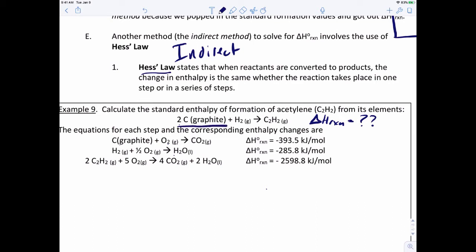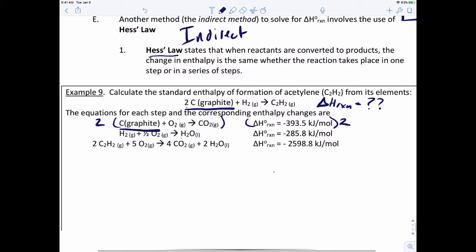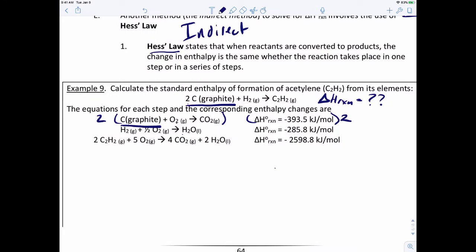For instance, we know that we've got two moles of graphite. The reaction that only contains graphite is down below, and we have one mole. So right off the bat, we need to multiply this reaction by two. But if we multiply that reaction by two, we also have to multiply the enthalpy of that reaction by two.